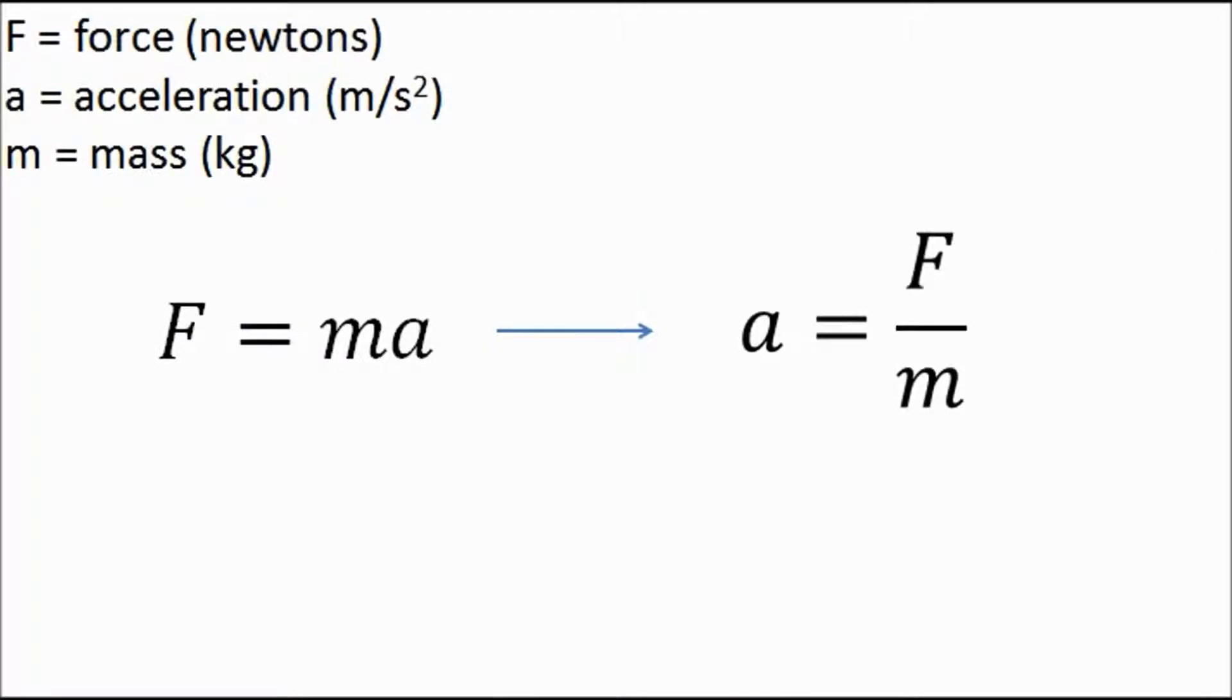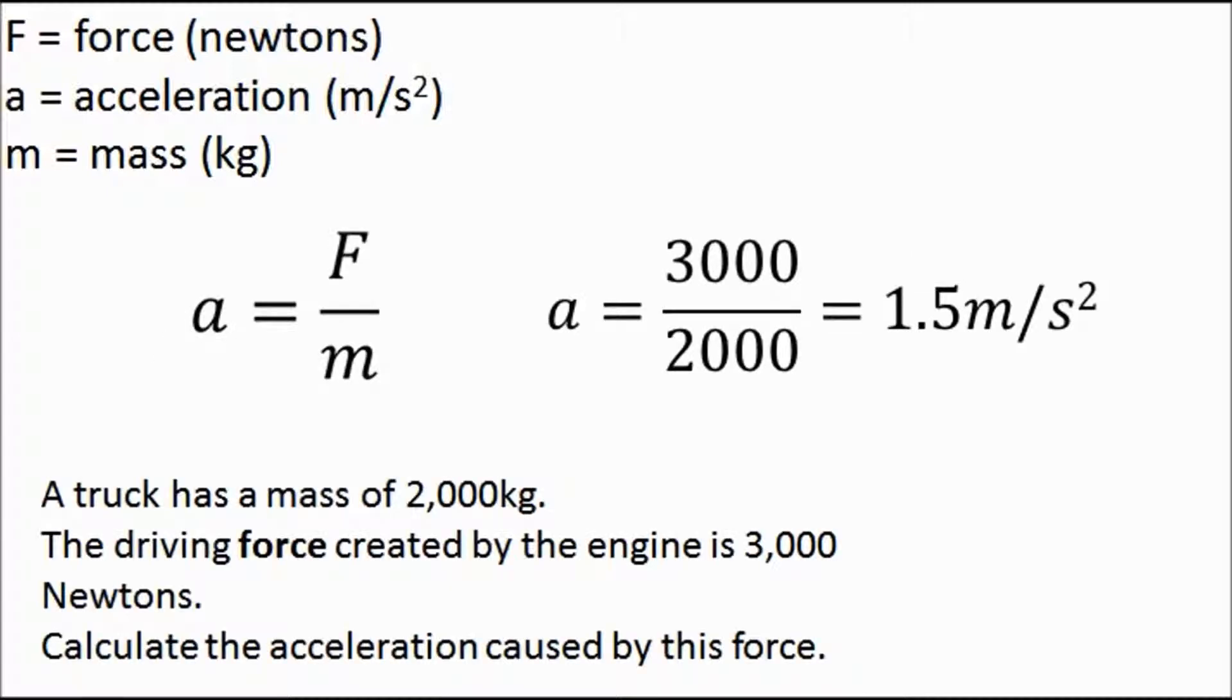Now, if we look at the second equation that we need to use for this, it's a rearrangement of Newton's second law, which is F equals MA. Rearrange that, you get A equals F over M. Acceleration is force over mass. Now, let's look at a question. A truck has a mass of 2,000 kilograms. The driving force created by the engine is 3,000 newtons. Calculate the acceleration caused by this force.